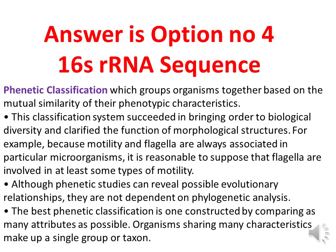Usually, phenetic classification uses phenotypic characteristics for the classification of bacteria. 16S rRNA sequencing is a phylogenetic method for classification of bacteria — it uses molecular methods for characterization. In phenetic classification, phenotypic characteristics are used. Morphological structures such as motility and flagella are evaluated; depending on morphological characters, bacteria is classified in phenetic classification. But in 16S rRNA, molecular classification is carried out, so the answer is option number four.